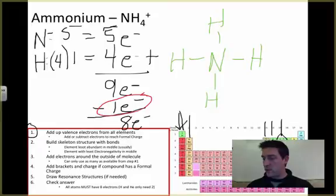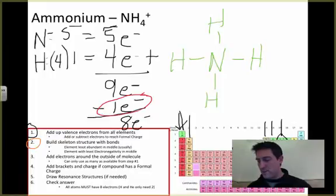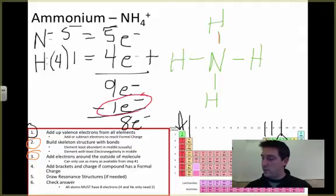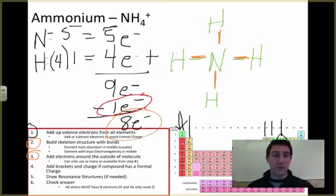So when we draw this structure out, now we need to count up how many electrons did we use when we built the skeleton structure. We've used two in this bond, two in this bond, two in this bond, and two in that bond. That gives me a total of eight electrons we've used. If we look down here, we can only use eight electrons, so we don't have any left. We don't have to do anything else.